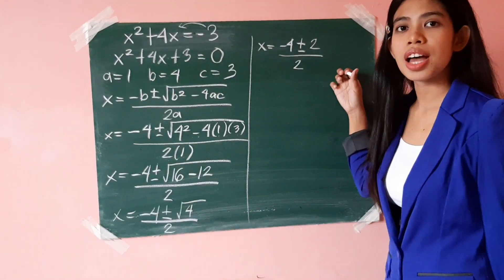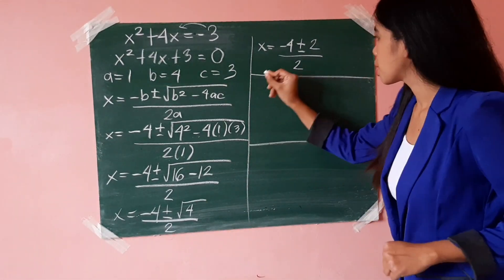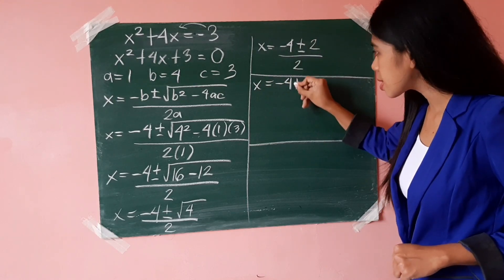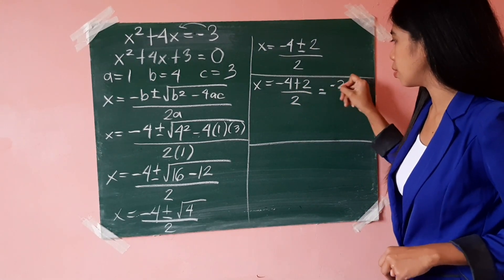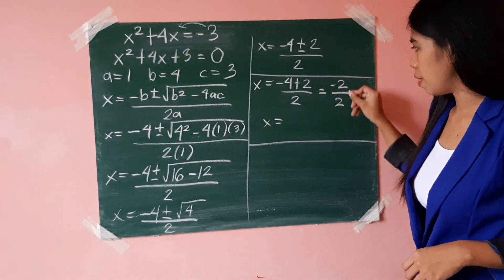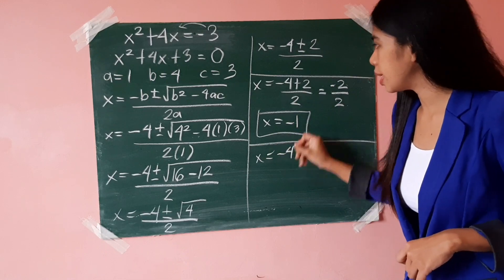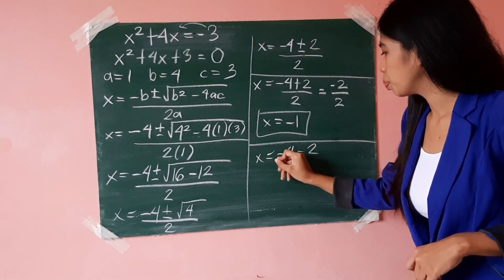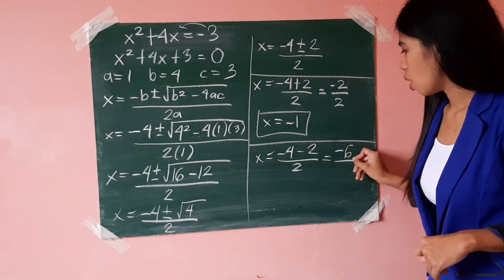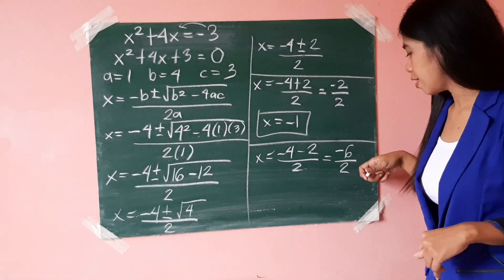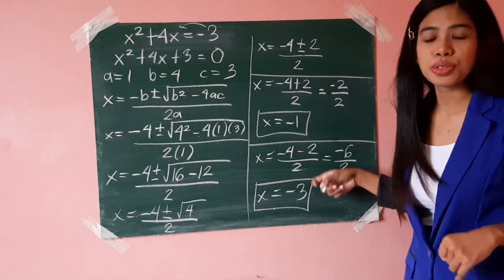Once you get here, separate the positive and negative 2 to find the two values of x. For the first value, x equals negative 4 plus 2 over 2 — that's negative 2 divided by 2 — so the first value of x is negative 1. For the second value, x equals negative 4 minus 2, all over 2 — negative 6 divided by 2 is negative 3. So the two values of x are negative 1 and negative 3.